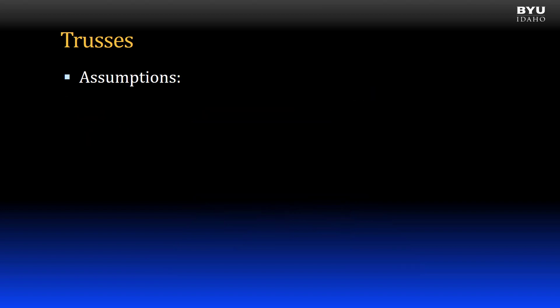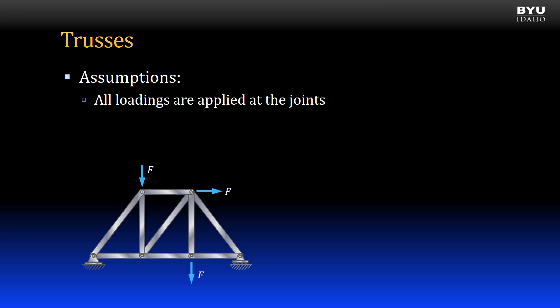For a structure to be classified as a truss, the following assumptions should be accurate. First, all loads applied to the truss must be applied at the joints, as demonstrated in this figure. This means that we ignore individual member self-weight, or else split the member self-weight in two and move each half to opposite ends.